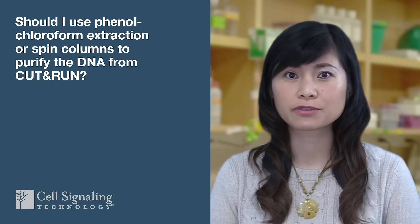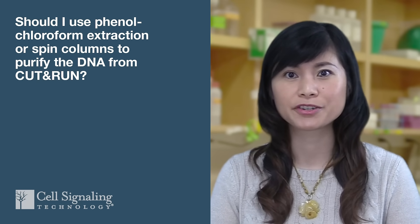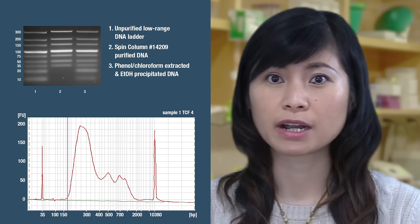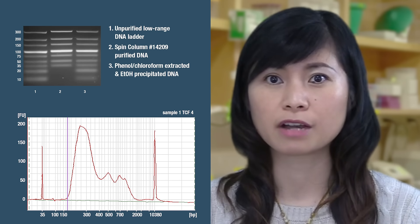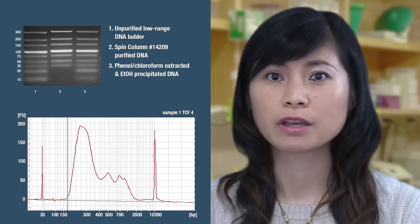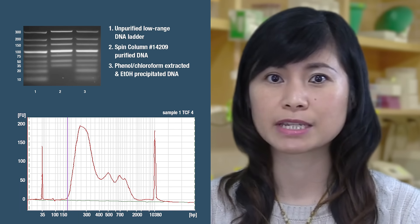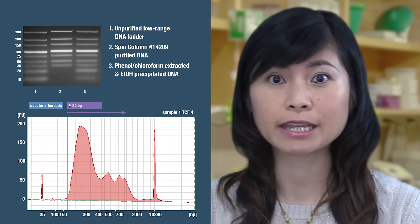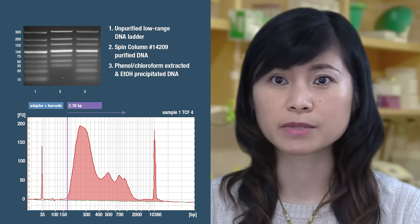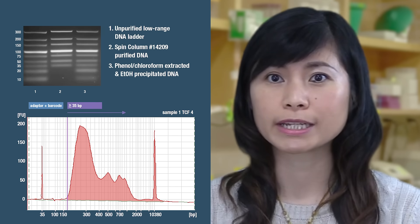Should phenol-chloroform extraction or spin columns be used to purify the enriched DNA? Spin columns are easy to use, but make sure the fragment size cut-off is not too high, or you may lose diversity of the CUT&RUN DNA fragments. The spin columns we recommend for CUT&RUN effectively recover DNA fragments 35 base pairs and up. Comparison to phenol-chloroform extraction followed by ethanol precipitation shows that this size range accounts for over 98% of total DNA fragments. So we recommend using these columns to save time and avoid working in the fume hood.